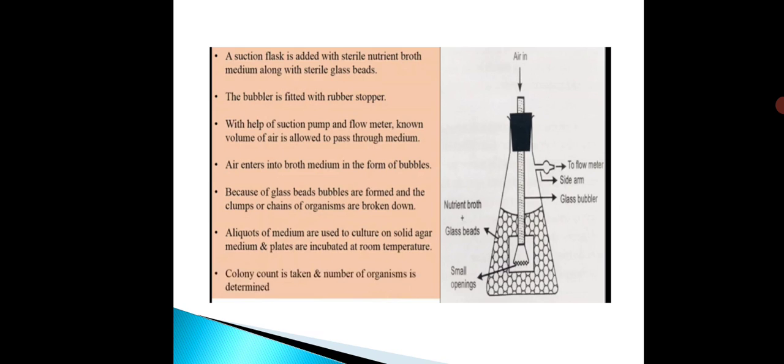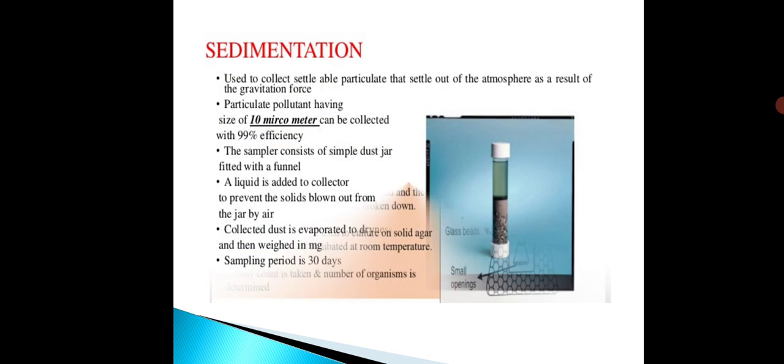Because of the glass beads, bubbles are formed and the clumps or chains of organisms are broken down. Microorganisms that are in clumps, groups, or chains are broken down and trapped into the glass beads. Afterwards, aliquots of the medium are used to culture on solid agar medium. The nutrient broth with settled microorganisms in the beads is poured onto the plates, which are then incubated and colonies are counted.